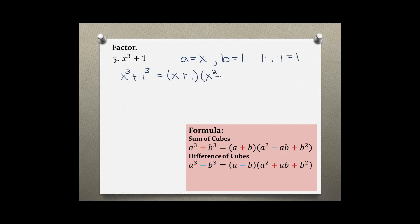And that is equal to A which is X plus B which is one, and then A squared so X squared minus A times B, one X or just X, and then plus B squared which is one times one, that is one.